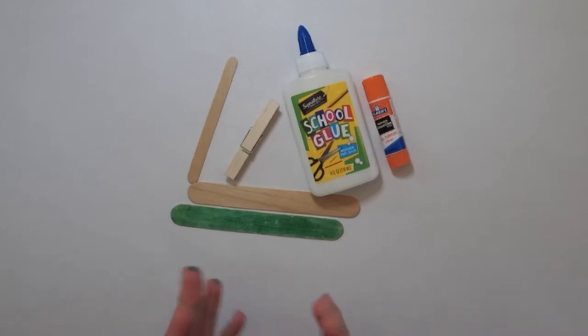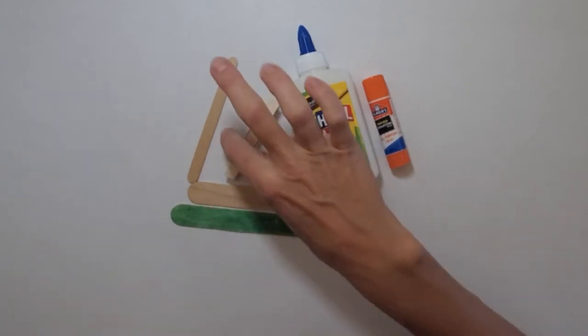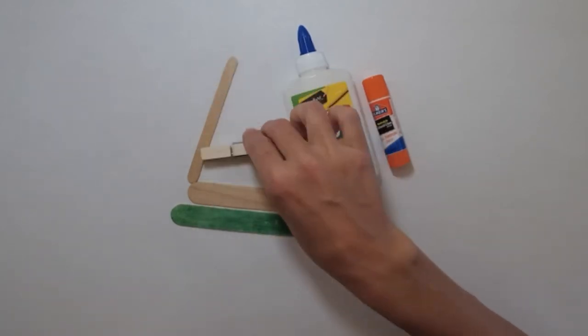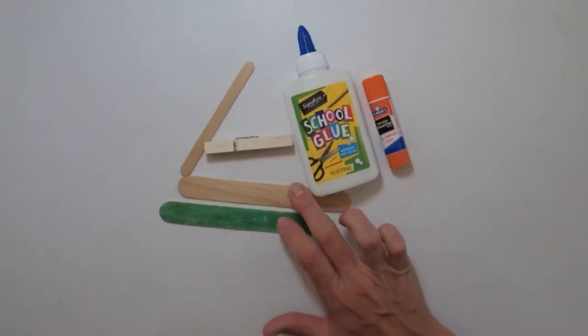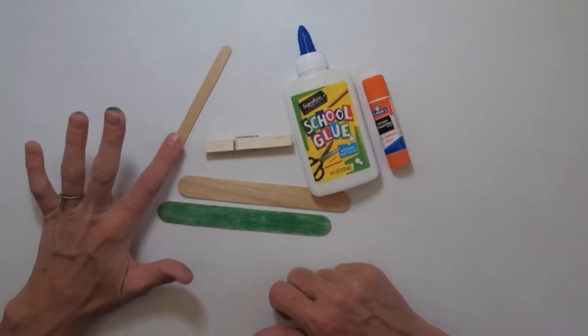To create the clothespin airplane, all you really need is a wooden clothespin and a couple of different sized popsicle sticks. I have the two larger ones that they also call tongue depressors and then one of the regular just small popsicle sticks.